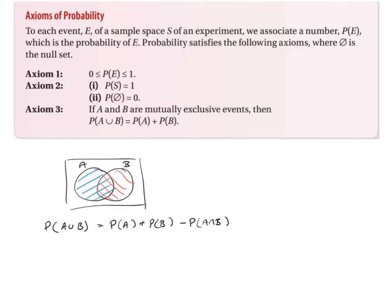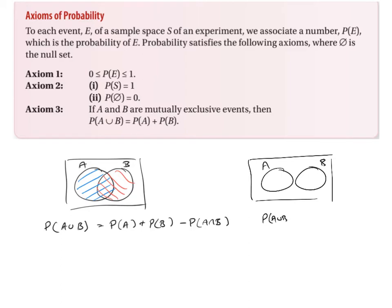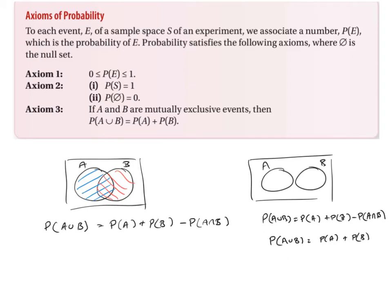Now if you look at what happens when it's mutually exclusive — mutually exclusive means there is no intersection. Using the same idea, the probability of A union B equals the probability of A plus the probability of B minus the probability of A intersection B. But since there is no intersection, that term equals zero, which just leaves probability of A plus probability of B. So P(A∪B) = P(A) + P(B) — but remember, that only works if A and B are mutually exclusive events.